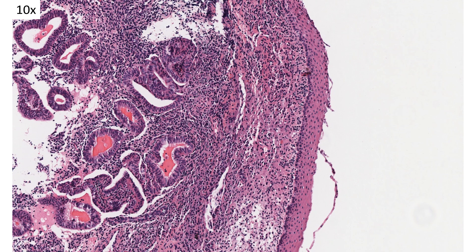Here's a higher-power view of this non-morular squamous metaplasia. The cytology of the cells involved looks quite bland — there's no atypia, just a nice stratified squamous epithelium. When this type of non-morular metaplasia covers the entire inside surface of the uterus, it has been called ichthyosis uteri. That's an older term you may hear associated with this, arising in the setting of chronic irritation, and again this is most typically benign.